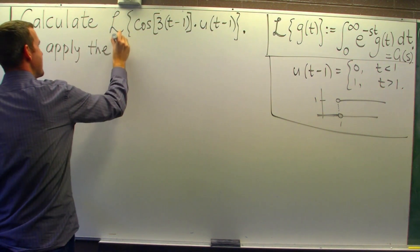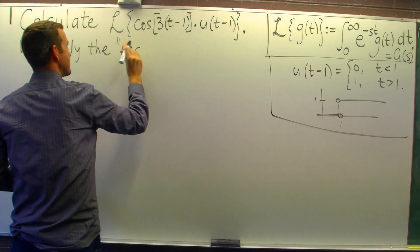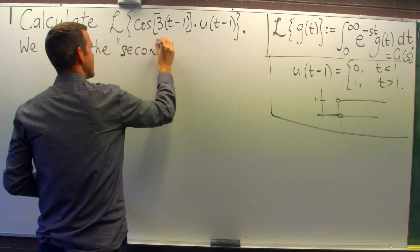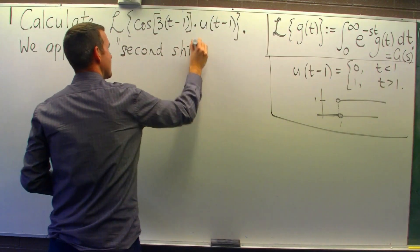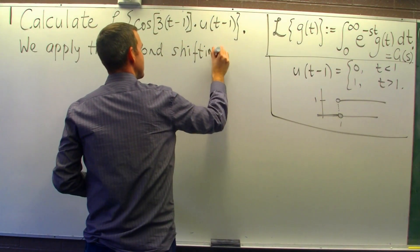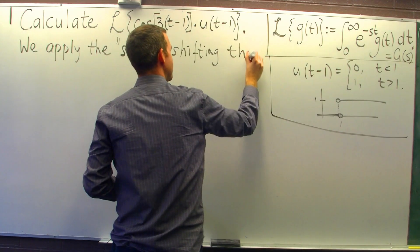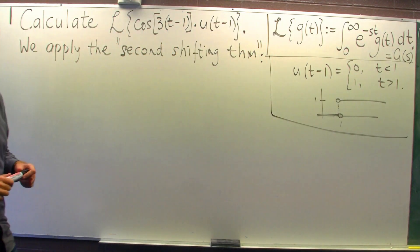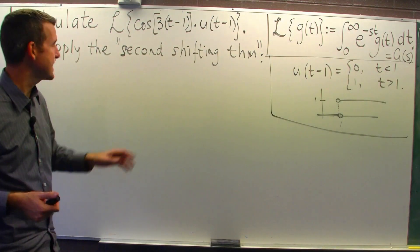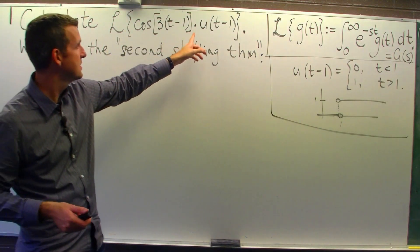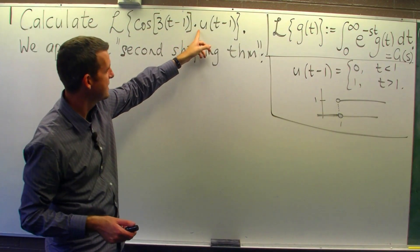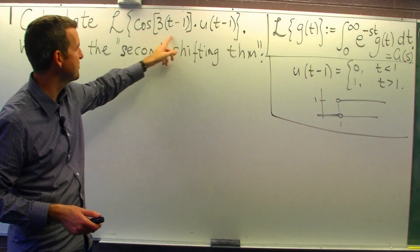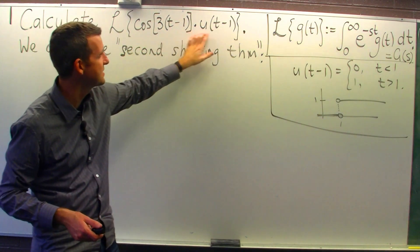We're going to apply the second shifting theorem. So what is that? Well, the second shifting theorem allows you to take the transform of a product where you have the step function multiplied with some other function, and they've both got the same shift in them.